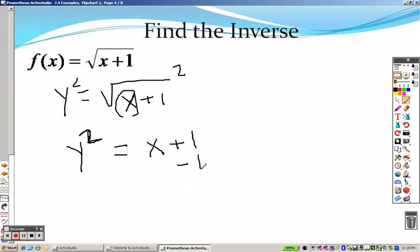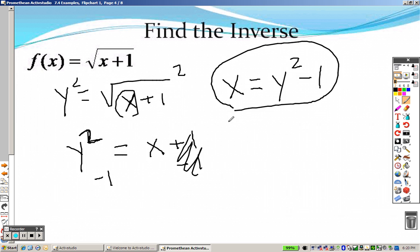So you get x by itself. I subtract 1 on both sides. So I get x equals y squared minus 1. So there's your inverse. Except, once again, if you want to graph it, we've got to switch them up. So we get y equals x squared minus 1. So we can graph that.